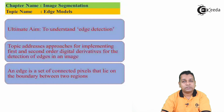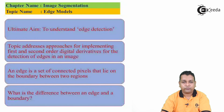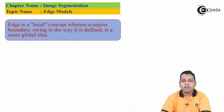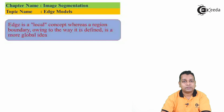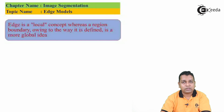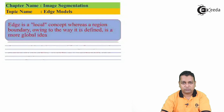An edge is actually a set of connected pixels that lie on the boundary between two regions. The difference between an edge and a boundary is that an edge is a local concept, whereas the region boundary, owing to the way it is defined, is a more global idea. We are concerned with edges of objects in images — whether binary, grayscale, color, or multispectral images.